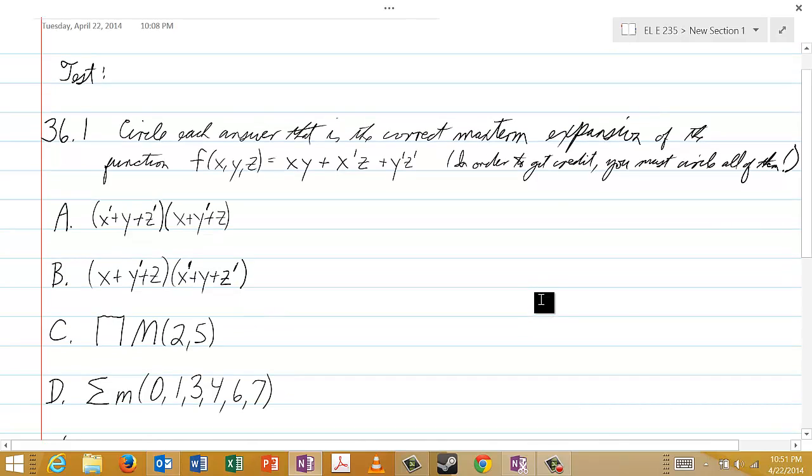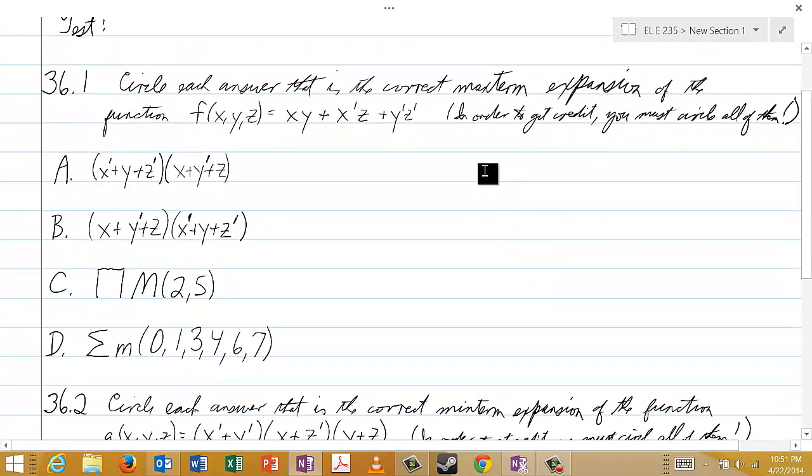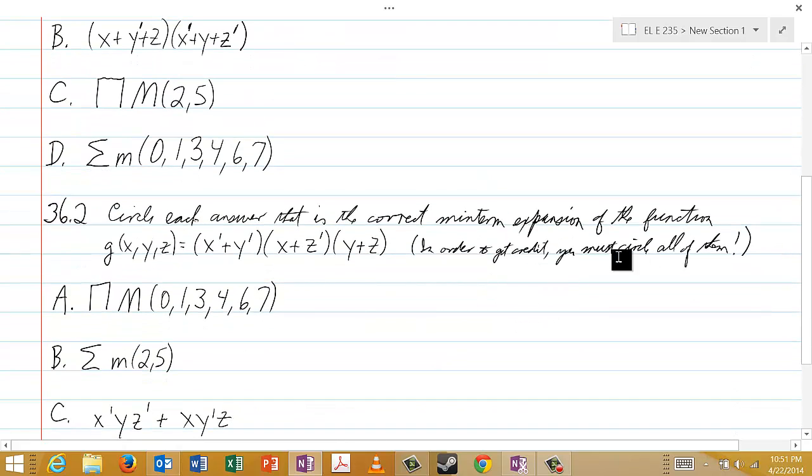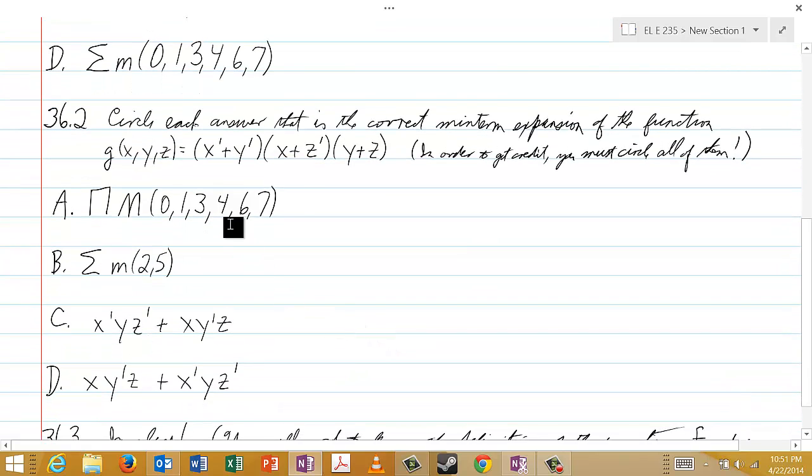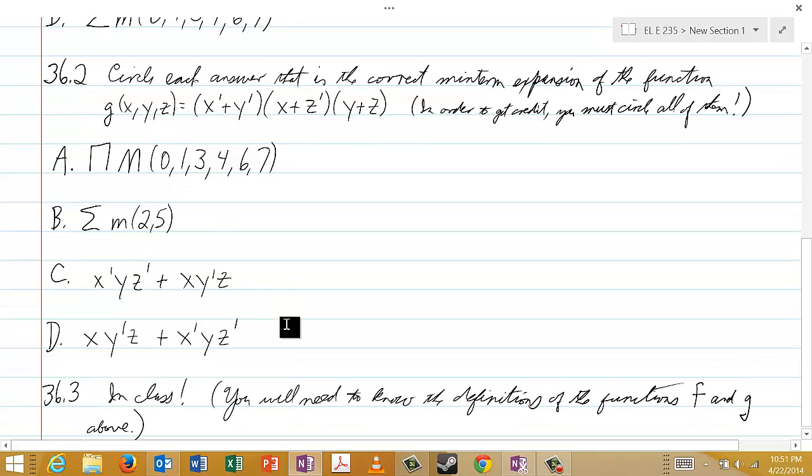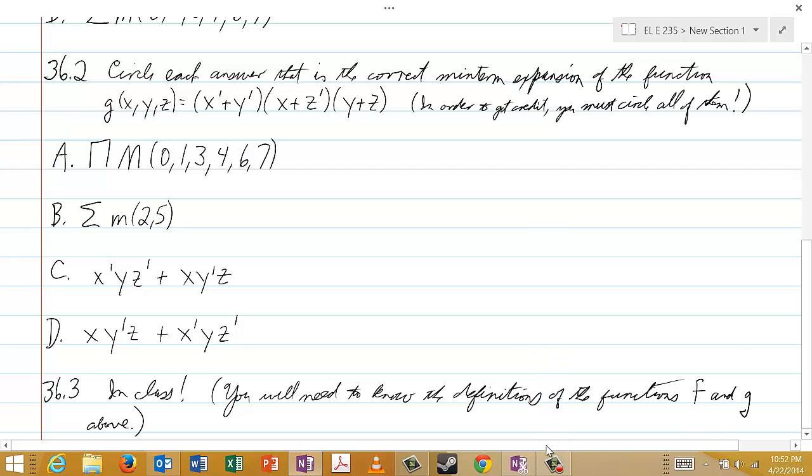And once again, I just want to make sure when I say here with both of these questions, when I say in order to get credit, you must circle all of them, I mean all of them that are correct. So all of them that are the correct max term expansion for F in this question, and all of them that are the correct min term expansion for G in this problem. And that's it. So good luck.